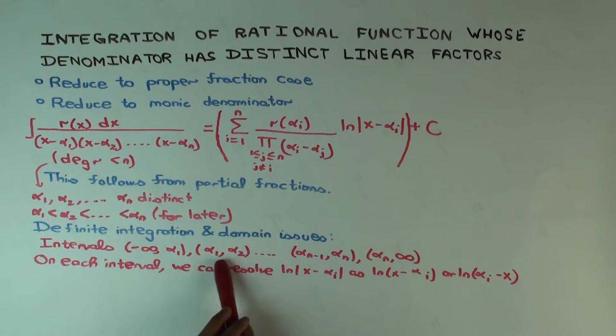There are n-1 of them bounded between adjacent α_i, plus one from -∞ to the first one, and one from the last one to ∞.